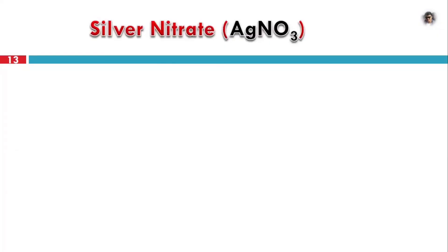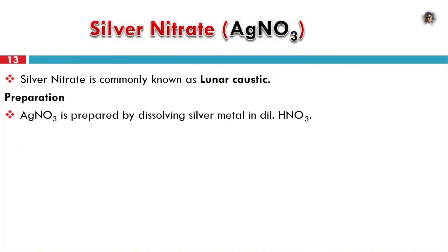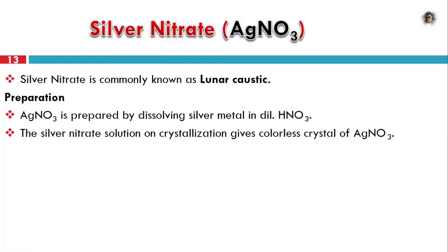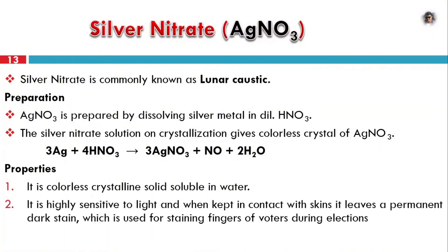Next compound: silver nitrate (AgNO3), also known as lunar caustic. Preparation: silver metal is dissolved in dilute HNO3 to give a solution of silver nitrate, which is then crystallized. Properties: it is a colorless crystalline solid, soluble in water. Action with light: AgNO3 is highly sensitive to light; when kept in contact with skin, it leaves a permanent dark stain, which is why it is used for staining fingers during elections. In sunlight, it is reduced to silver metal and the color turns black.